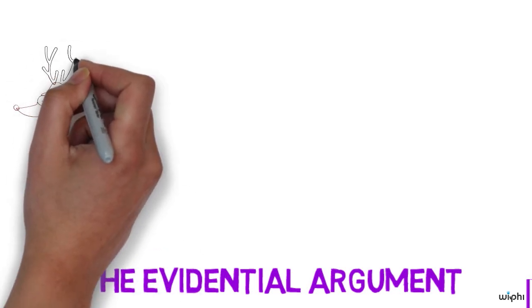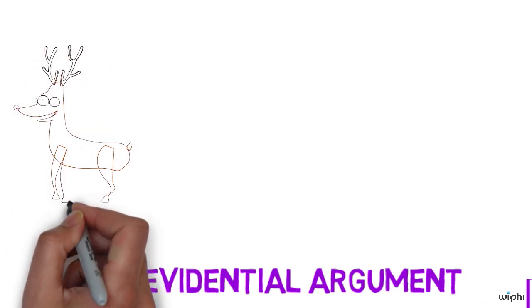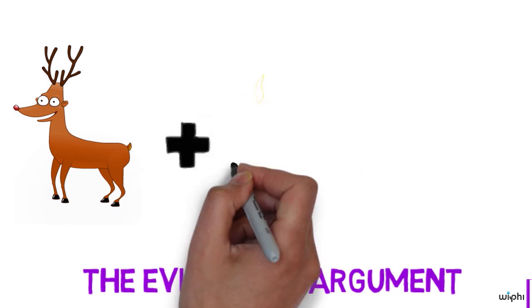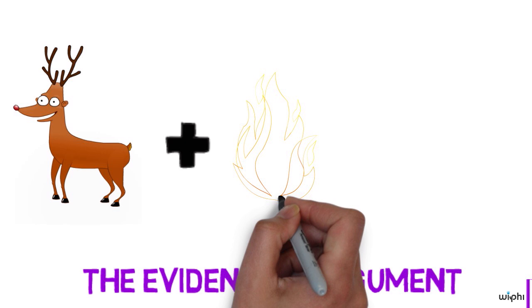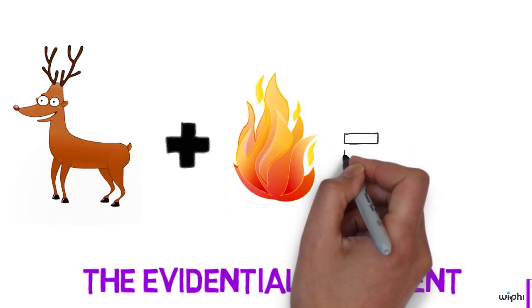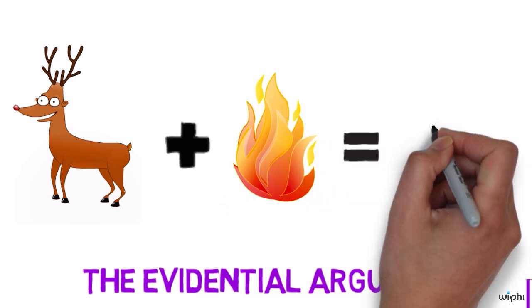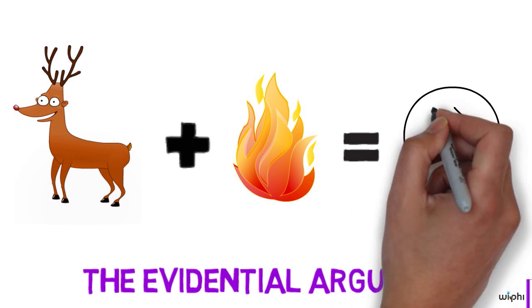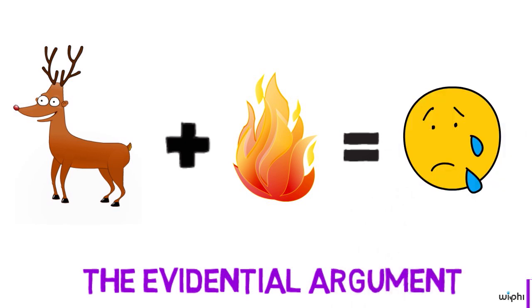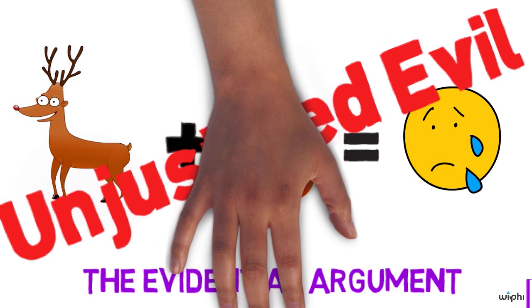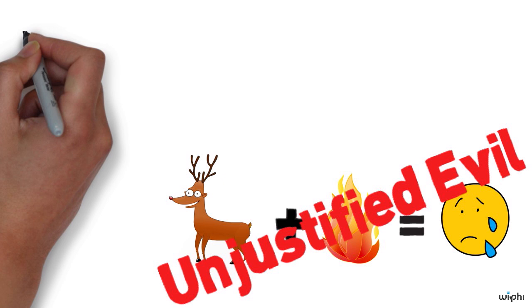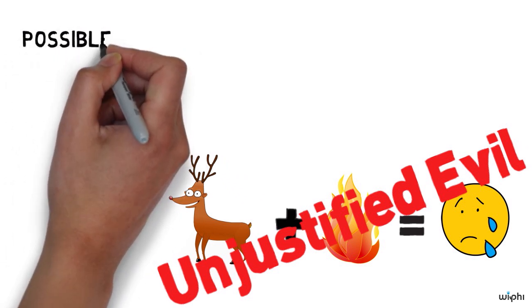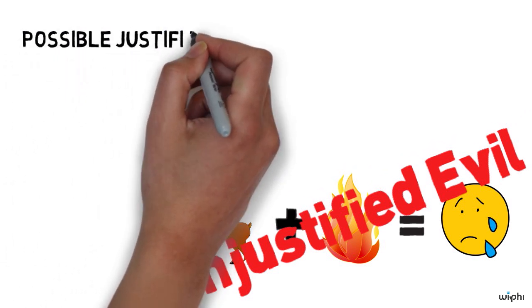So let's begin to do that. Well, William Rowe, in his article, tells the story of a deer who's caught in a forest fire and suffers horribly for four or five days before she dies. And he points out that in a case of suffering like this, we cannot see any reason that God might have to allow it. It looks like an unjustified evil. And we can go through and look at some of the standard reasons God might have to allow evils and show that they don't seem to apply in this case.